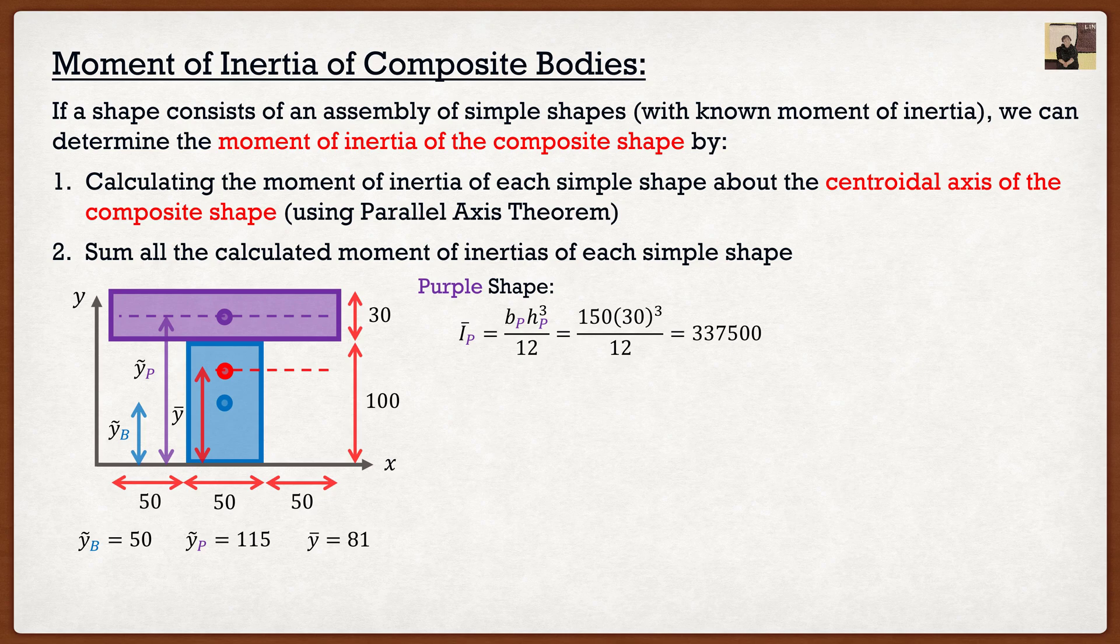To convert it to the moment of inertia around the red line, we use parallel axis theorem. And the only thing I actually need to know is the distances between those two axes, which I call dp. So if we know what the distance between these two axes are, we can actually find the moments of inertia of our purple shape around the red axes.